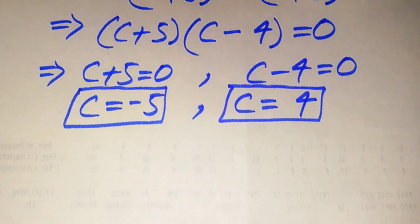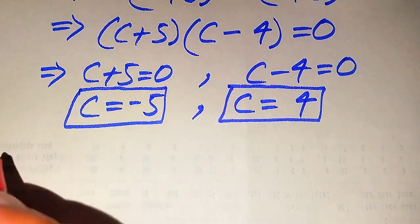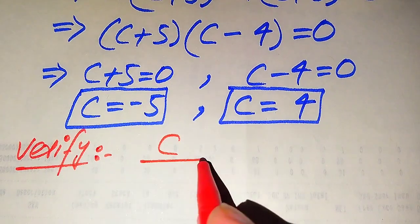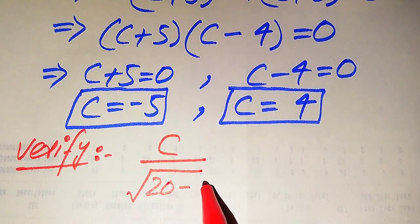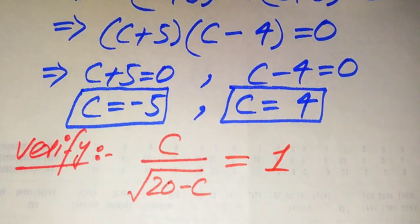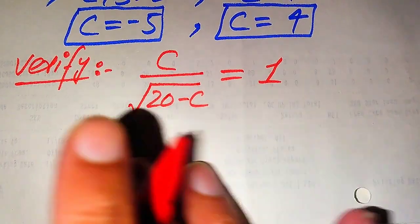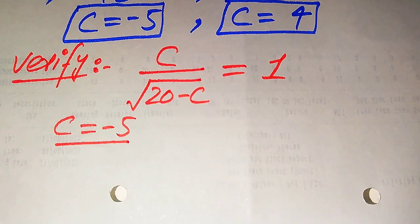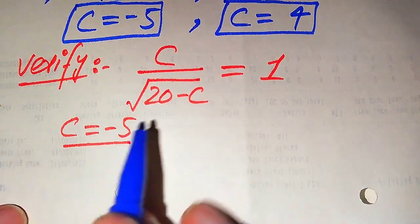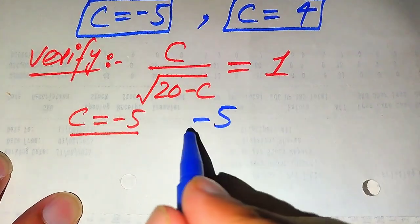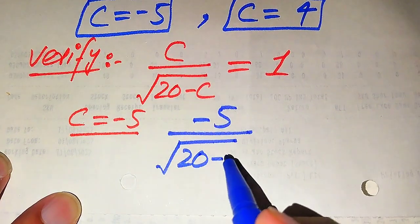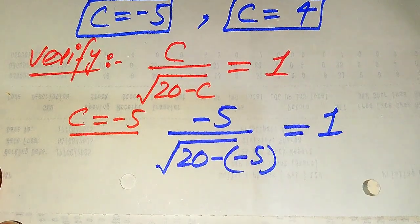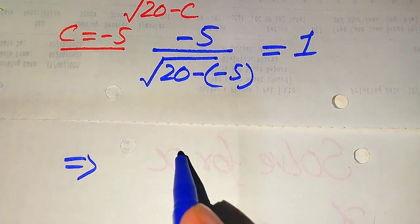We get two roots of the given equation. Now we need to verify which root is a solution and which is an extraneous root. The given equation is C divided by the square root of 20 minus C equals 1. We verify C equals minus 5 first. Putting C equals minus 5 into the left hand side, we get minus 5 divided by the square root of 20 minus (minus 5).